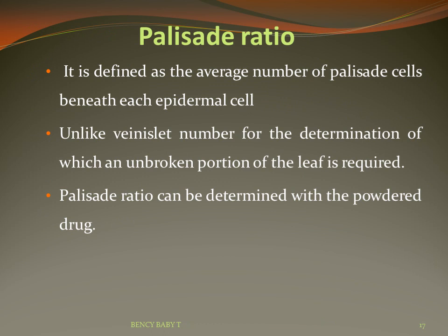Palisade ratio is defined as the average number of palisade cells beneath each epidermal cell. It represents how many palisade cells are present per epidermal cell. An unbroken portion of the leaf is required, and the palisade ratio can also be determined with powdered drug.